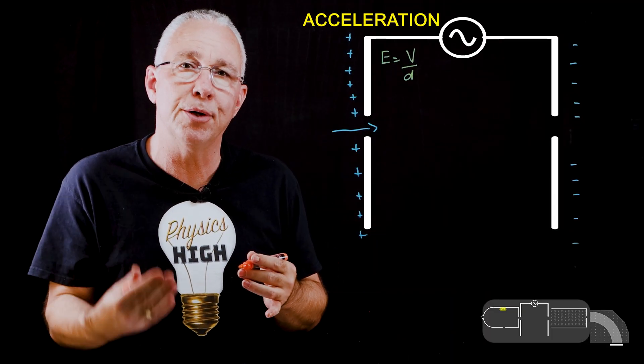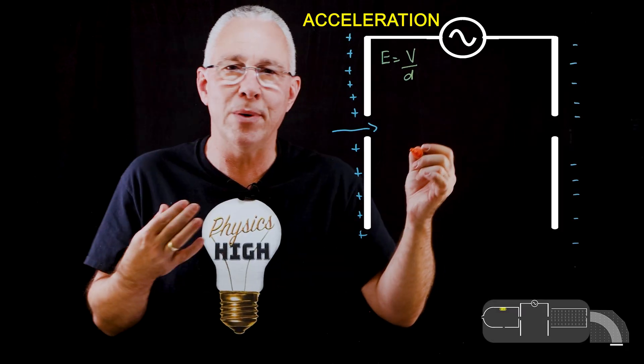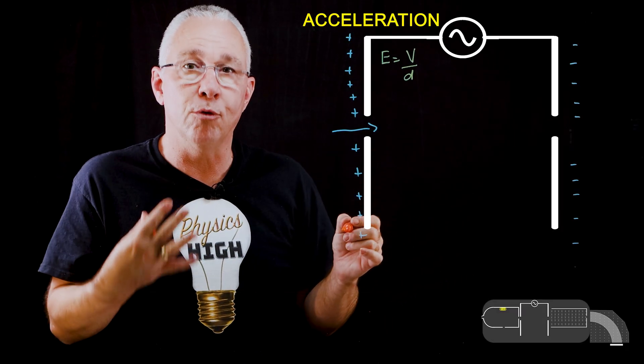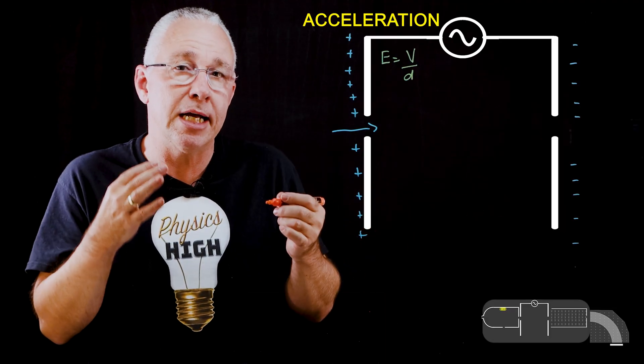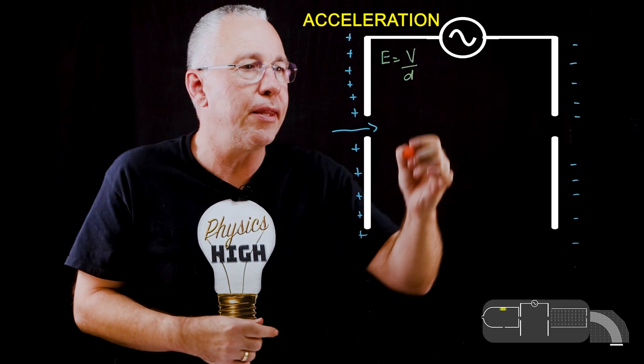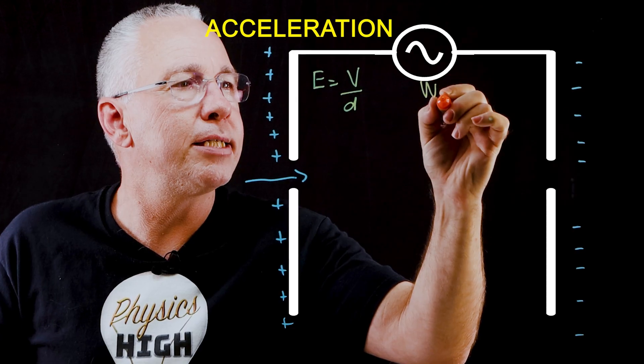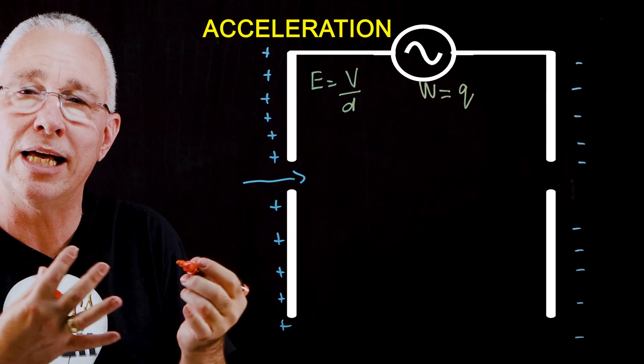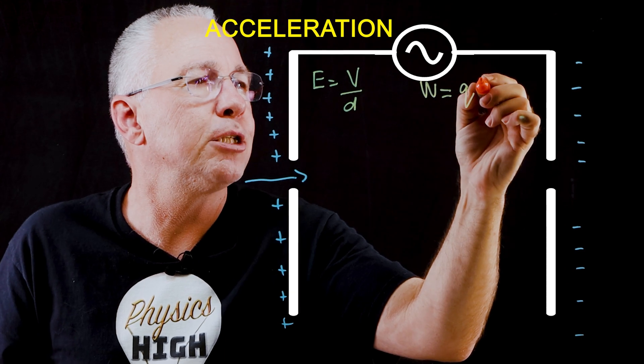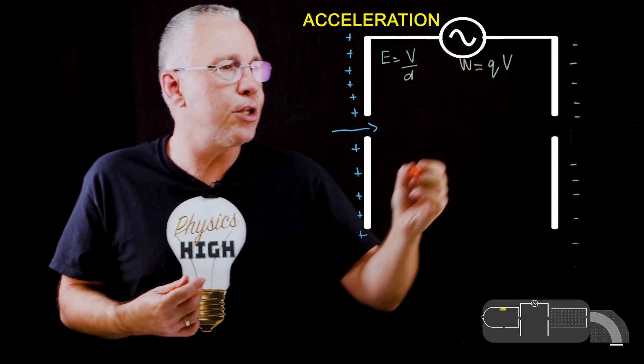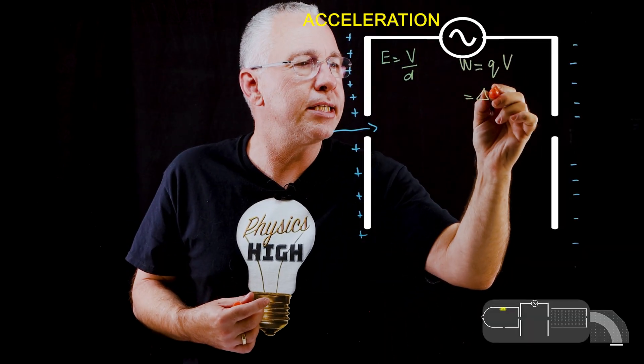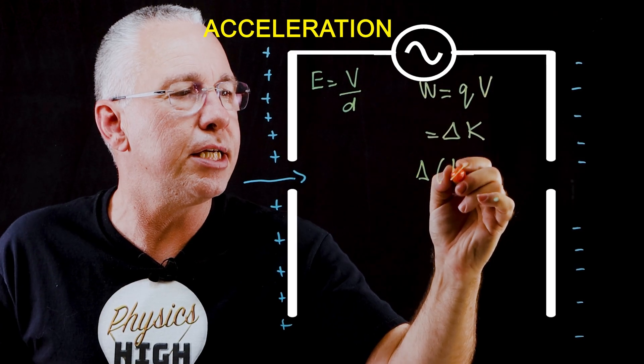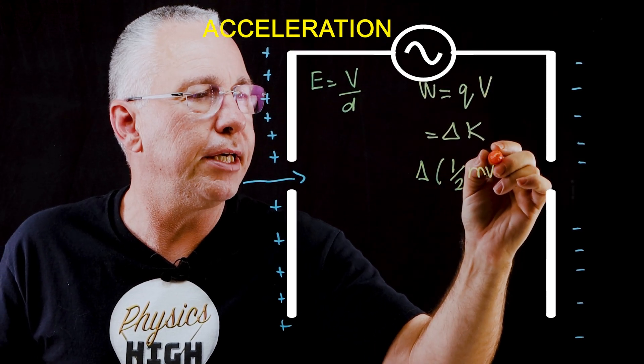Voltage is defined as the work per unit charge. What we can now say is, therefore, these charges will experience force over a certain displacement, and as a result, they will have work done on them. And so that work ends up being the charge that is on them. They all have the same charge multiplied by the voltage. Now that results in an increase in kinetic energy, and therefore, that increase in kinetic energy is a half mv squared.